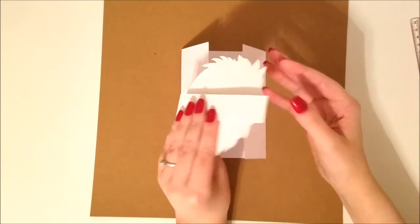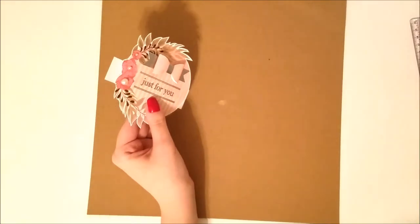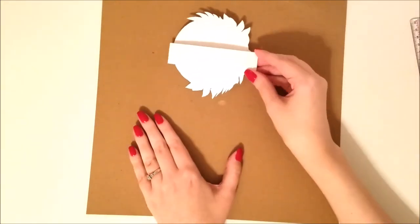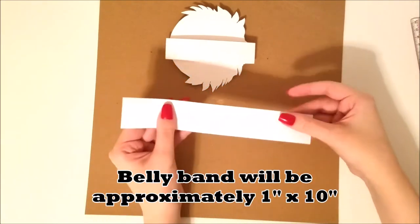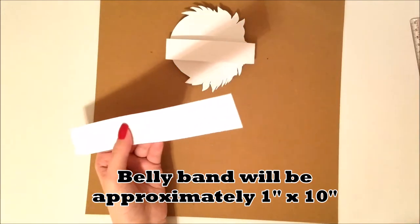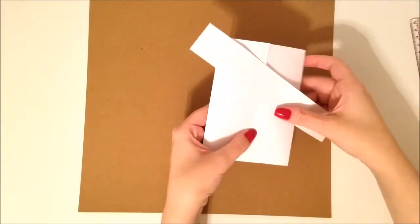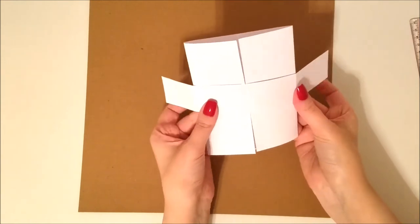Now we're going to go ahead and work on this little belly band. The big image that you see there on front of the belly band, that's just the A&B Illustrations image I just fussy cut out. And the belly band's going to be approximately 1 inch by 10 inches.